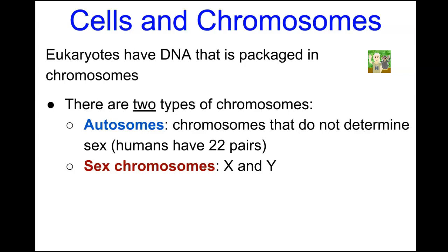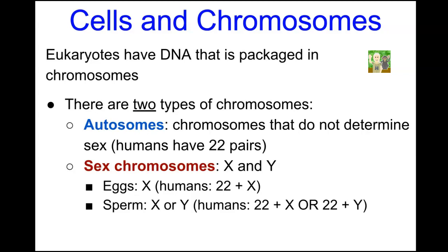The female ovum always carries the X chromosome, so for humans it would be 22 autosomal chromosomes plus the X chromosome. For sperm, it's those 22 autosomal chromosomes and then a spermatozoa can carry either an X chromosome or a Y chromosome. Because of this, it is the male sperm that determines the gender of the child.